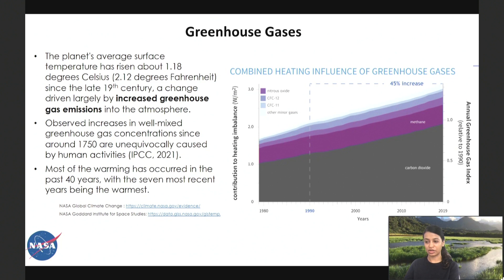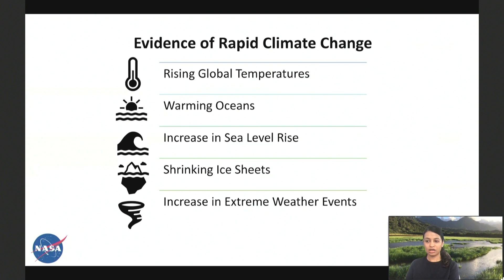Prior to the industrial revolution, CO2 concentrations were fairly stable at around 280 parts per million. By 2020, they had risen by more than 48 percent. Since the 1990s, we have seen about a 45 percent increase in the combined amount of all greenhouse gases in the atmosphere. Following a multiple lines of evidence philosophy, scientists study various systems for evidence of climate change: rising global temperatures, warming oceans, increasing sea level rise, shrinking ice sheets, and increases in extreme weather events.